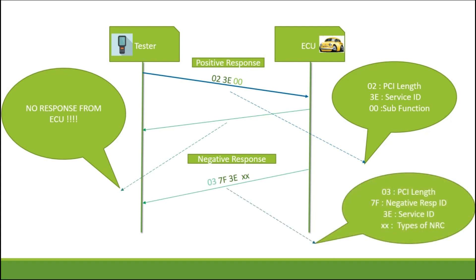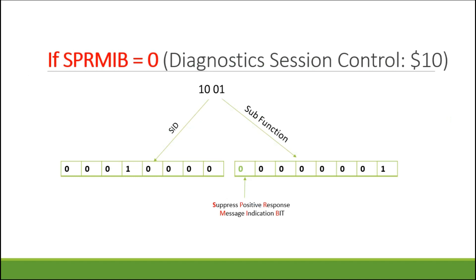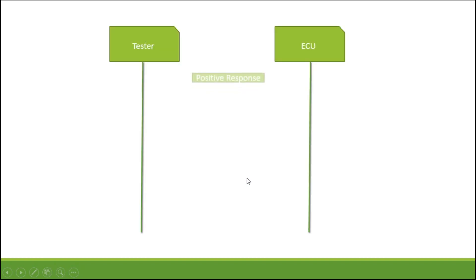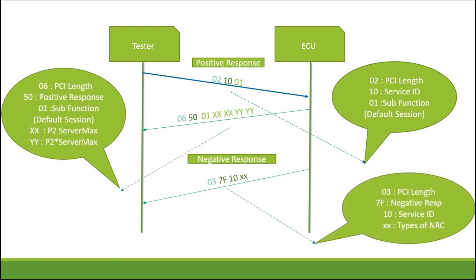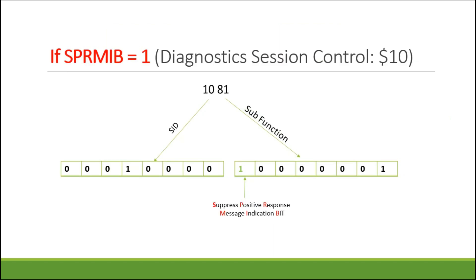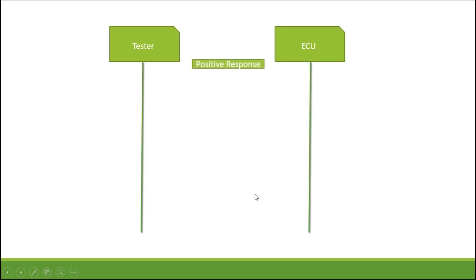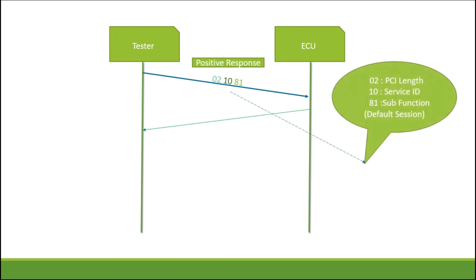So one more example: diagnostic session control. Here the Suppress Positive Response bit is 0, so as usual you will get a positive response. And here the same bit is set as 1, so the ECU won't send any responses.